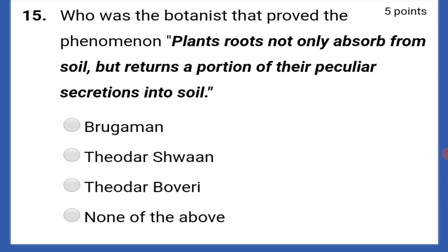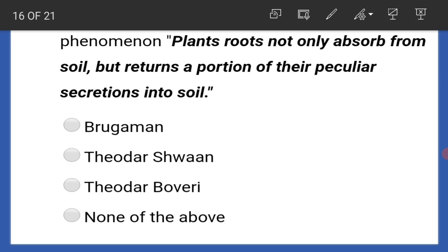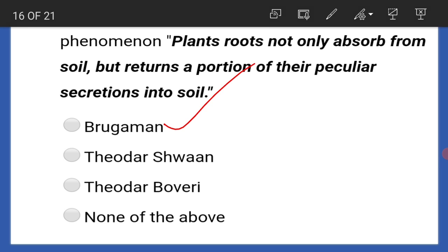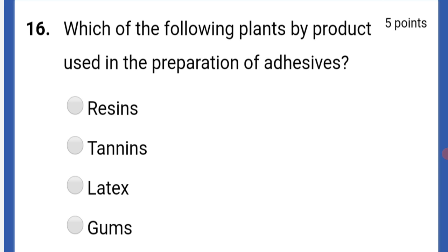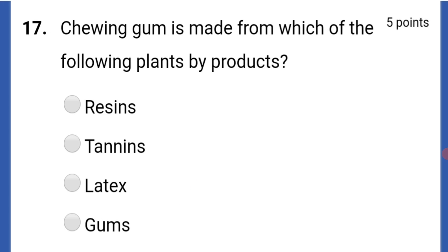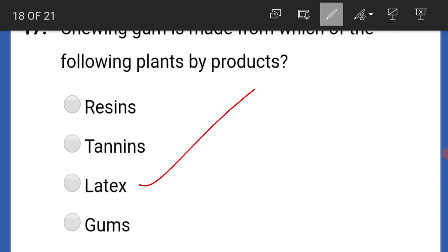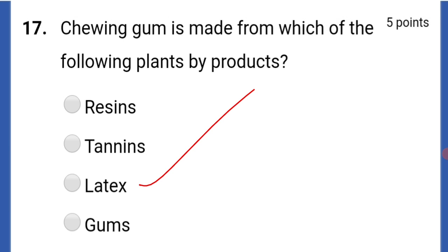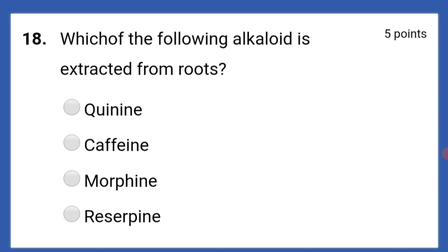Who was the botanist that proved the phenomenon that plant roots not only absorb from the soil but also return a portion of their peculiar secretions into the soil? That is Brugman. Which of the following plants' byproduct is used in the preparation of adhesives? That is gums. Chewing gum is made from which plant byproduct? That is latex.